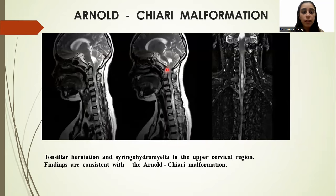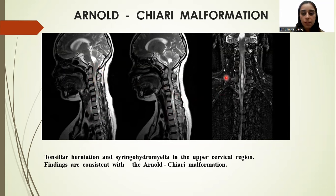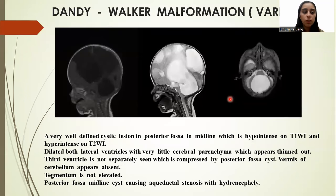In Arnold Chiari malformations, these are T2-weighted sagittal and coronal images in which we can see tonsillar herniation and syringohydromyelia in the upper cervical region. Findings are consistent with Arnold Chiari malformation.